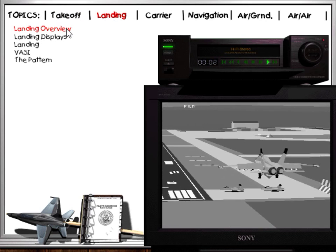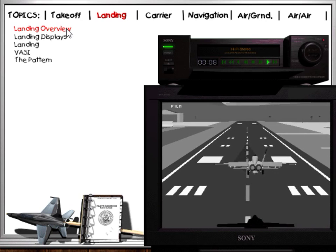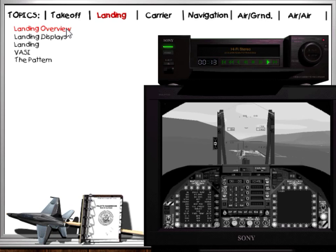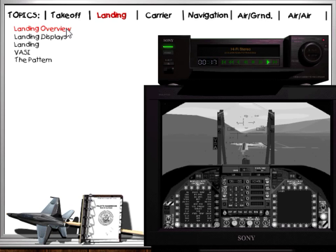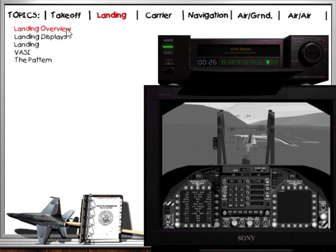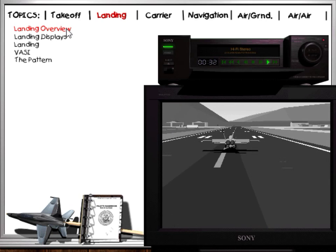Now that you are familiar with the aircraft, let's begin instruction on one of the most difficult tasks of flying any aircraft: landing. The training segments to follow will cover the procedures and techniques you need to get back on the ground. We'll go over HUD displays, instruments, and the crucial points of speed control and angle of attack. We'll cover the steps to get you into the groove, including setting up for a visual landing. Follow the training material, then give it a try in the training missions. All the skills you develop at this point will come into play in the next section: carrier operations.